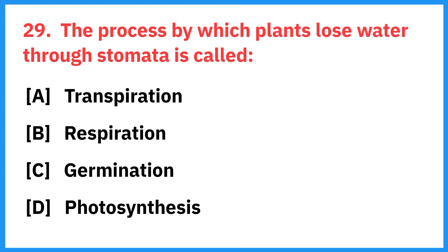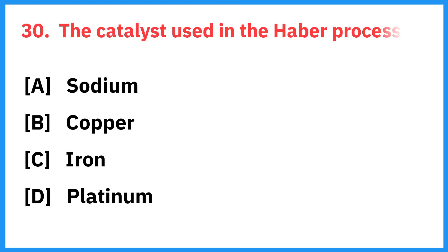The process by which plants lose water through stomata is called? Correct answer is transpiration. The catalyst used in the Haber process is? Right answer is iron.